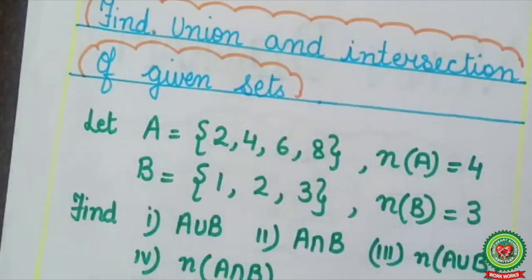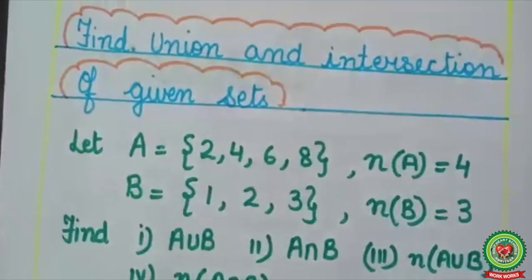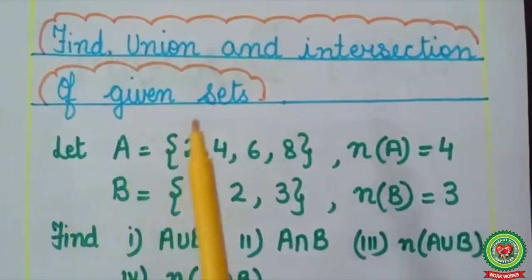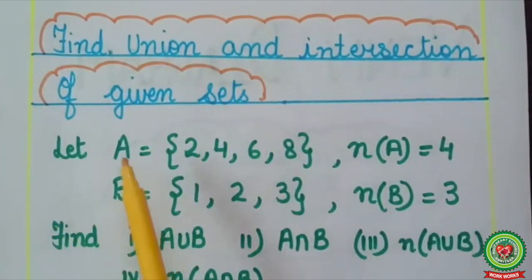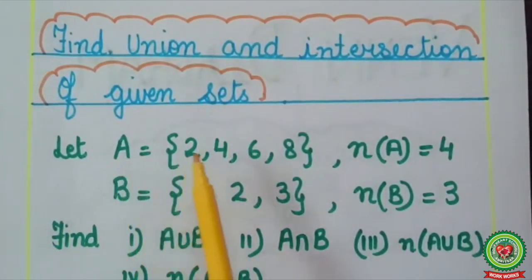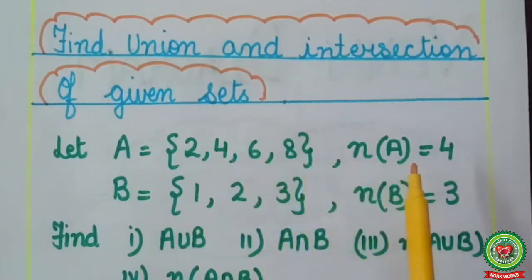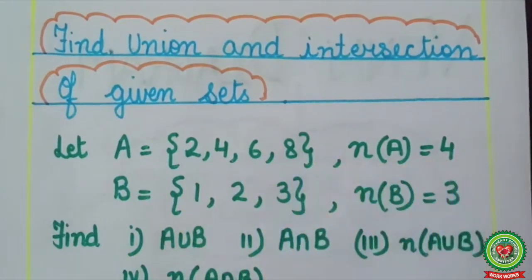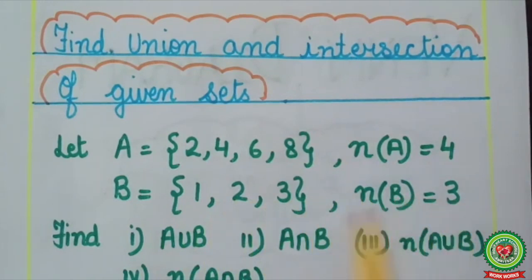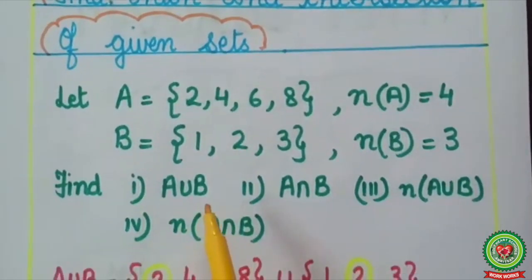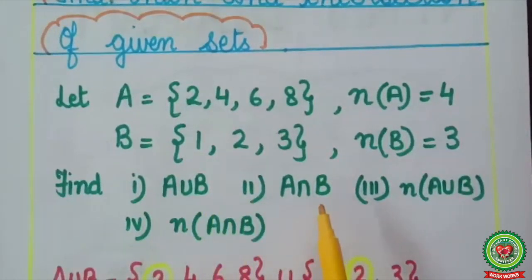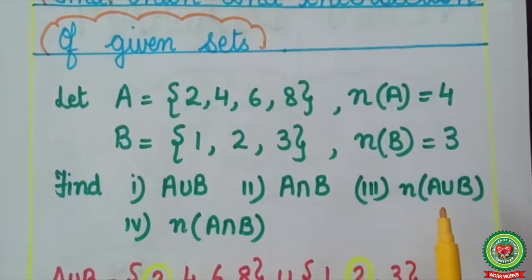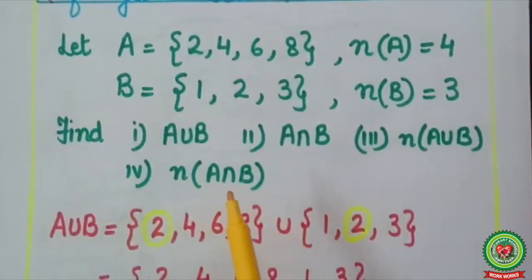Let's understand with examples. Consider set A = {2, 4, 6, 8}, whose cardinal number is 4, and set B = {1, 2, 3}, whose cardinal number is 3. We have to find: A∪B, A∩B, the cardinal number of A∪B, and the cardinal number of A∩B.